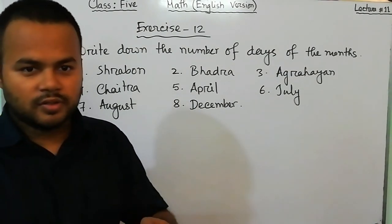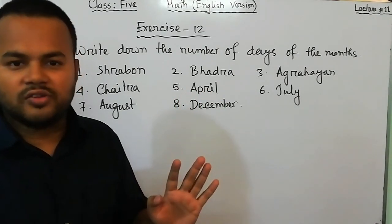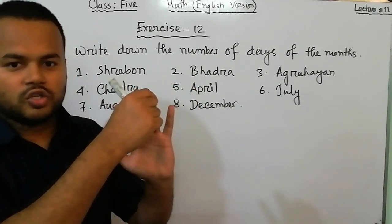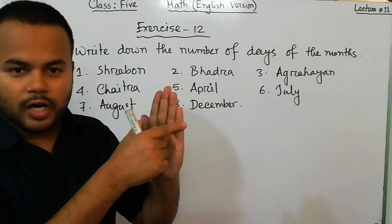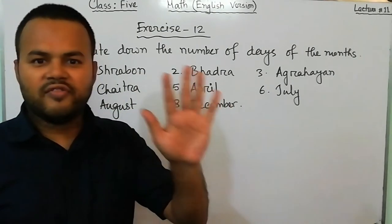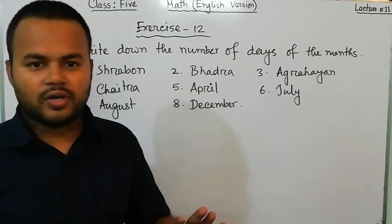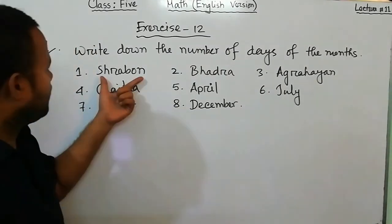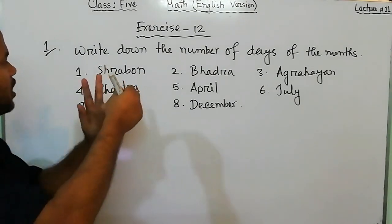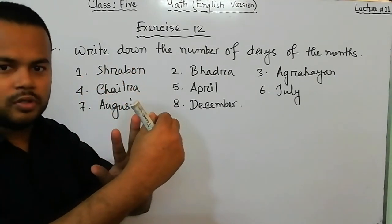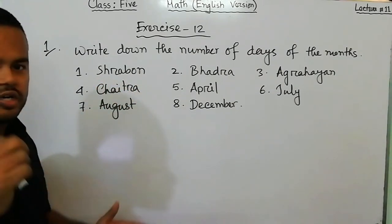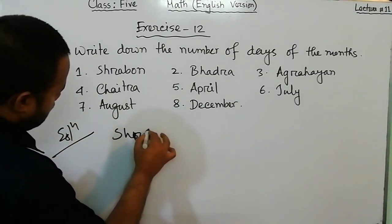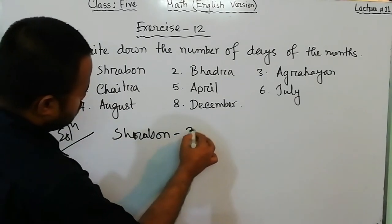For Shravan: we know that in the Bangla calendar the first five months — Boishakh, Jyoishtho, Ashar, Shravan, Bhadra — each have 31 days. Shravan is the fourth month, so Shravan has 31 days.